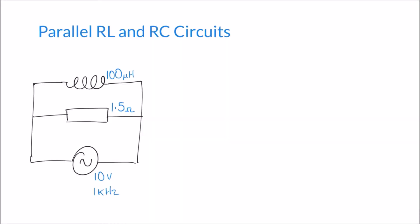Hello and welcome to this video on parallel RL and RC circuits. In this video we're going to look at how different components behave when we connect them together in parallel. In this case in front of us we're seeing a resistor in parallel with an inductor both connected to an AC power supply, and we're also going to look at a similar example later on where a resistor is connected in parallel with a capacitor, hence parallel RC circuits as well.